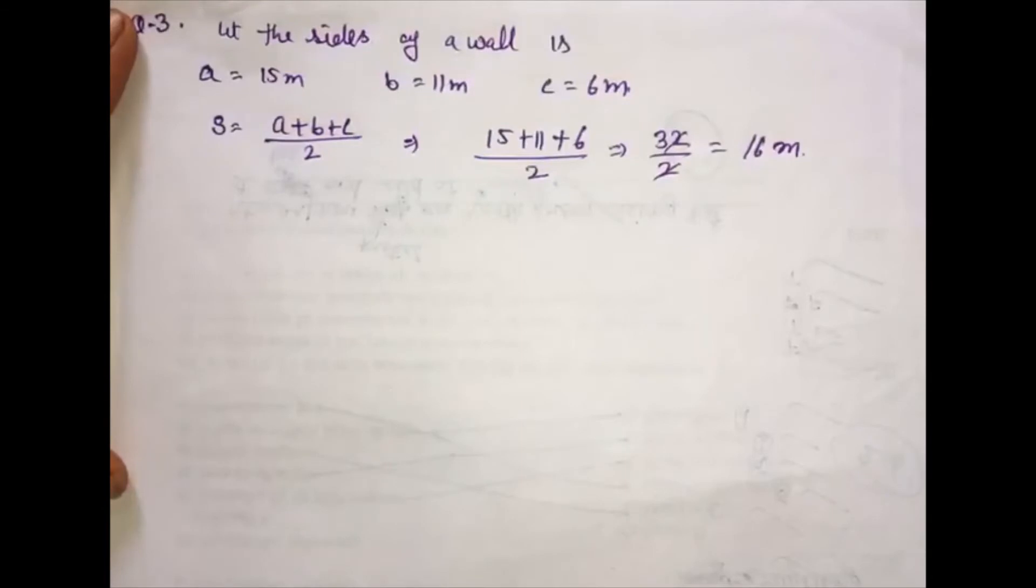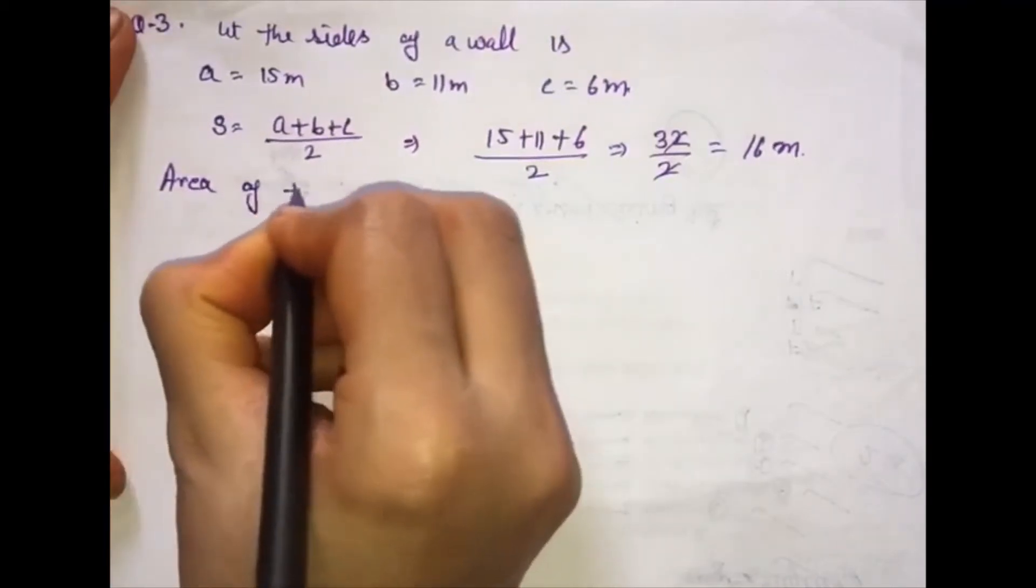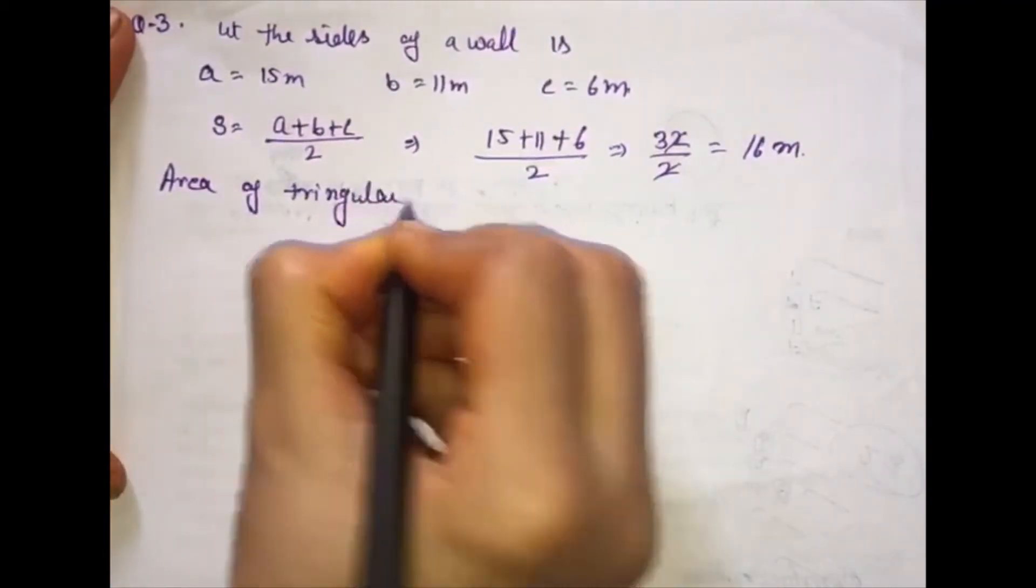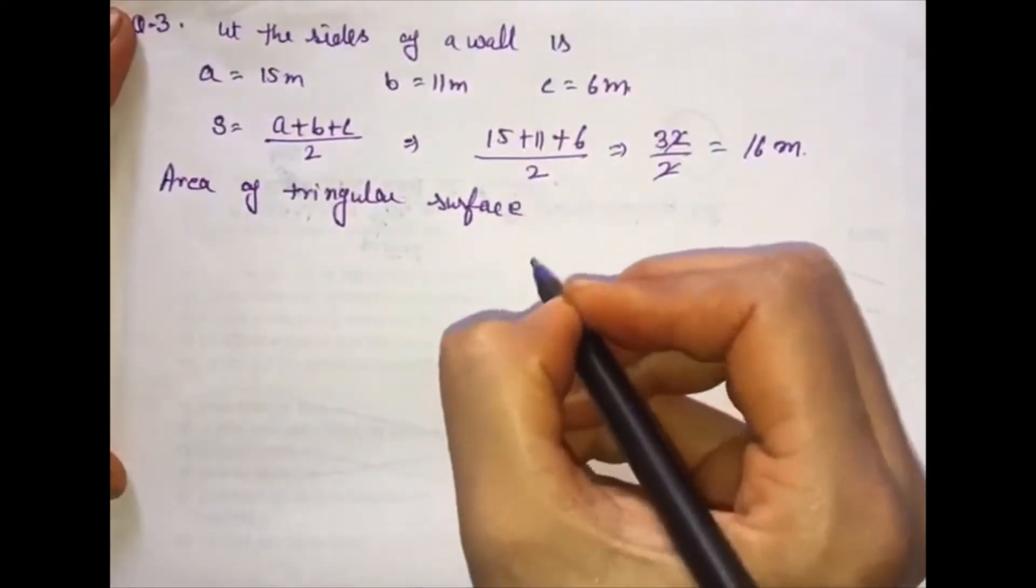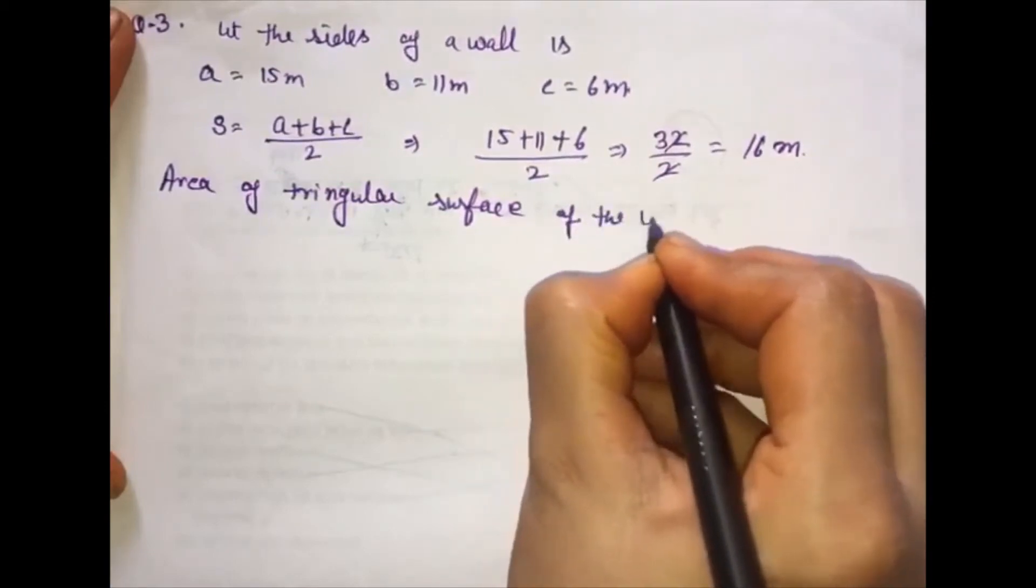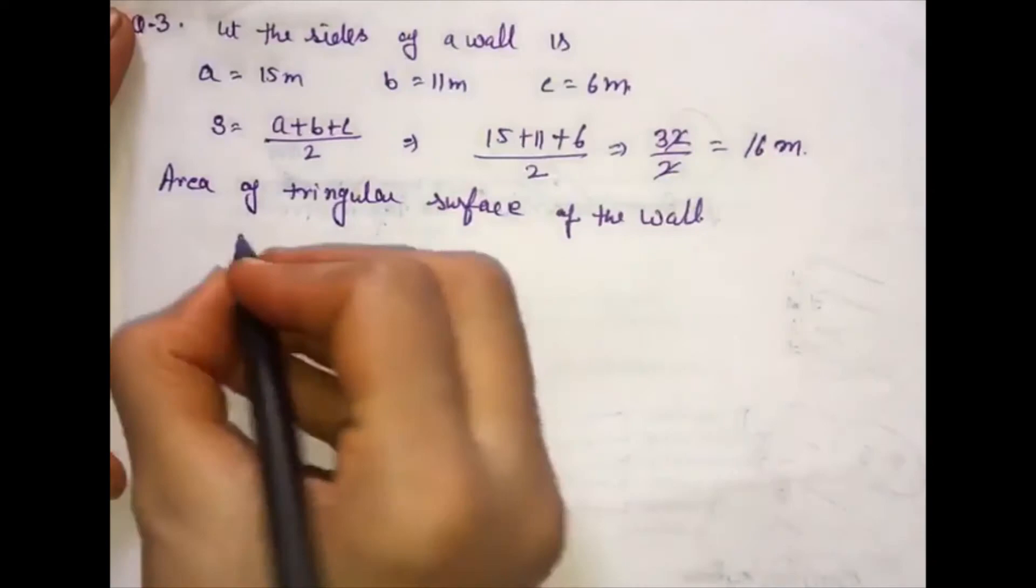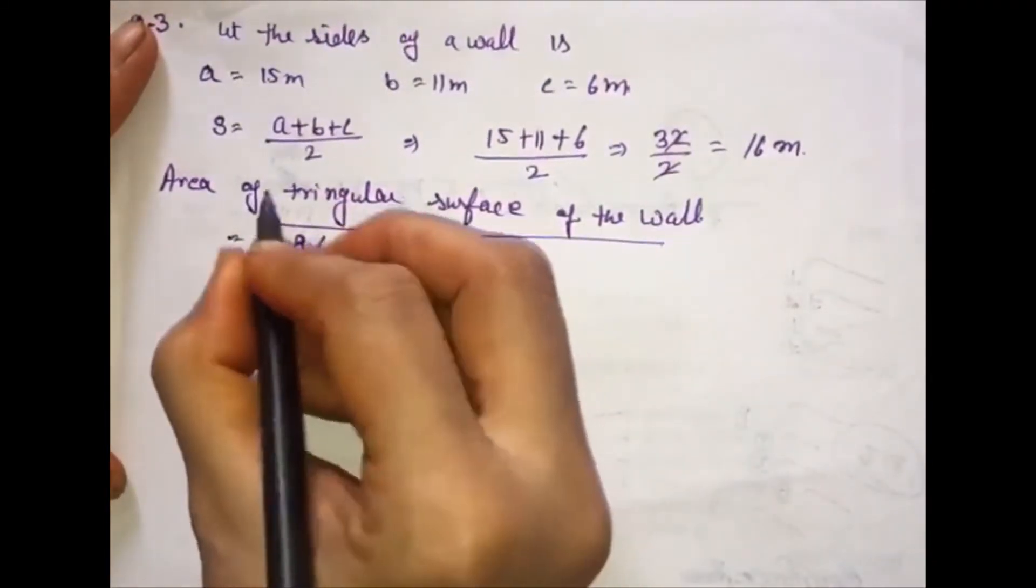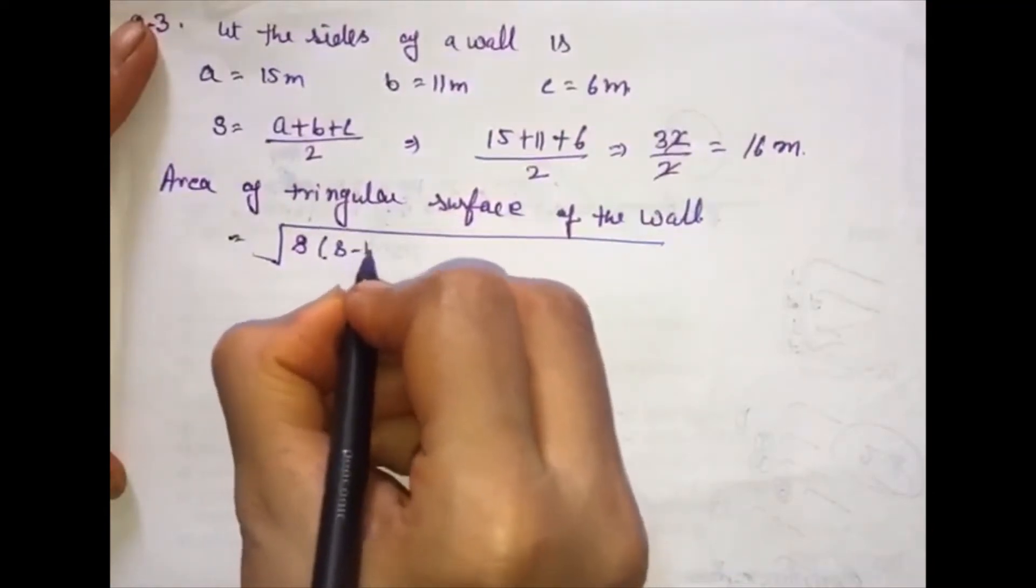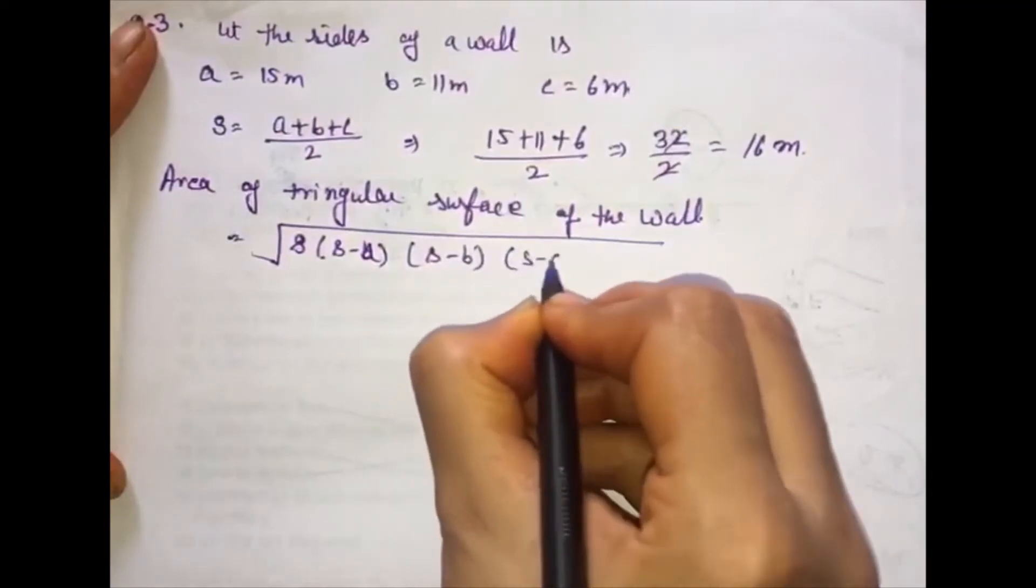Now we find the area of triangular surface of the wall. Here we have a formula: square root of S times S minus A times S minus B times S minus C.